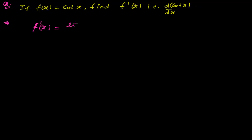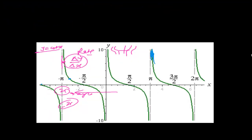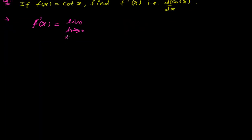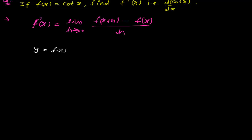The derivative f prime of x is equal to the limit when h tends to 0. Here h is a small change in x — a small change in the angle. In some books you may see it as delta x tends to 0; delta x and h are the same thing. So it is: f(x+h) minus f(x), whole divided by h. Our function here is cot x.